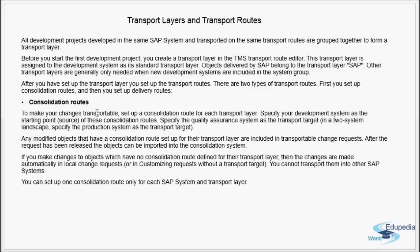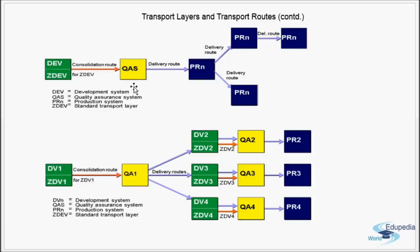To make your changes transportable, set up a consolidation route for each transport layer. Specify your development system as the starting point — the source — and specify the Quality Assurance system as the target. In a two-system landscape, specify the production system as the transport target. So when you have development and QA, you create a transport layer. SAP has its own transport layer called 'SAP,' and for all custom developments we create a new transport layer.